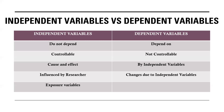Independent variables are referred to as exposure variables, which are used in carrying out a smooth research work process. Whereas dependent variables are nothing but the outcomes or attainments of a particular research work. This is how the differences between independent and dependent variables can be understood.